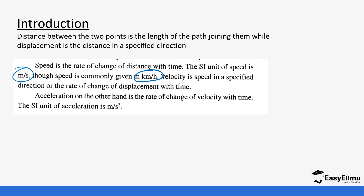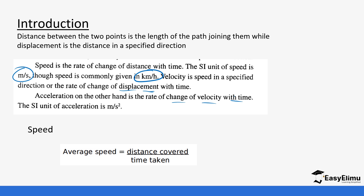Velocity is speed in a specified direction, or the rate of change of displacement with time. We'll look later at velocity and also acceleration, which is the rate of change of velocity with time, and see how we can use velocity and acceleration in different situations.